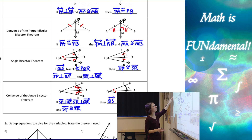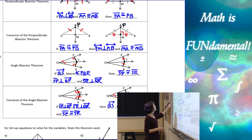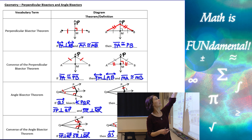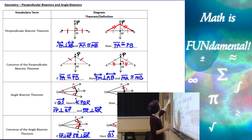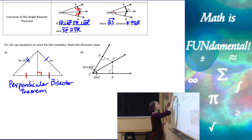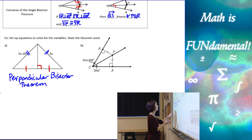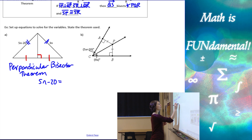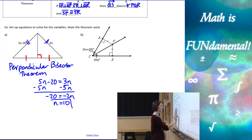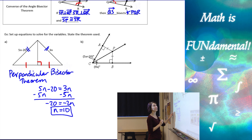Looking back at the theorem, if I have that given information, I can use it to state that PA is congruent to PB. So these two expressions have to be congruent, and we set them equal to each other: 5N minus 20 equals 3N. Collecting the N's gives us negative 20 equals negative 2N, so N equals 10.